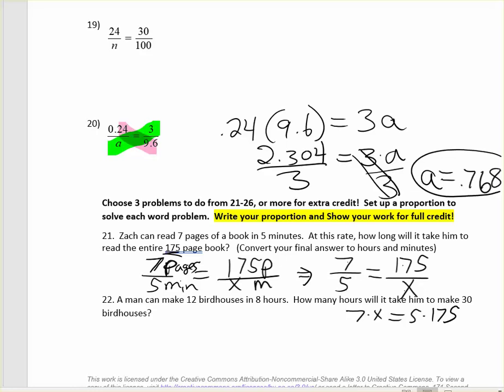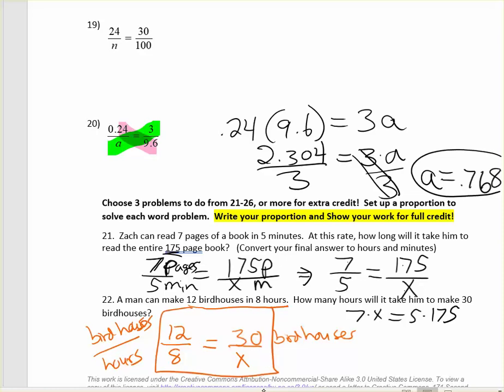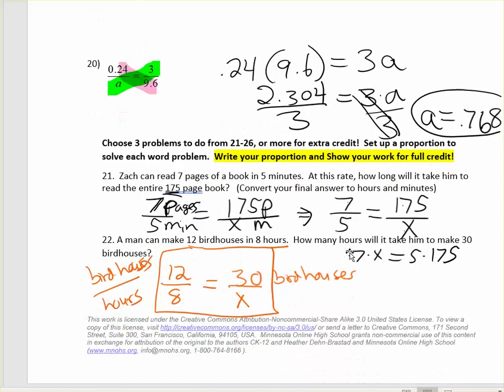I'm not going to solve the next one, but I'm going to help you set it up. So it says a man can make 12 birdhouses in 8 hours. So write that as a ratio, 12 birdhouses in 8 hours. We put birdhouses on the top, and we put the time, the hours on the bottom. When you do your second ratio, you have to do the same setup. So it says how many hours will it take him to make 30 birdhouses? So the 30 birdhouses is in the numerator, and the x, or the unknown, is in the denominator. So you'll use that proportion to solve and find the solution. Make sure when you set up your proportion, that your ratios are set up equally.